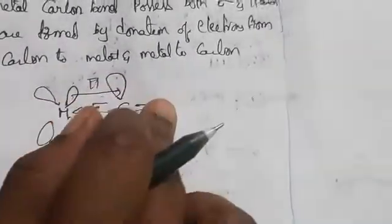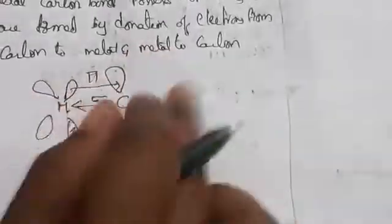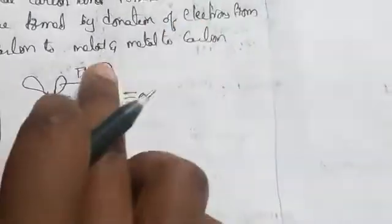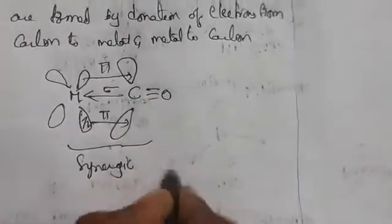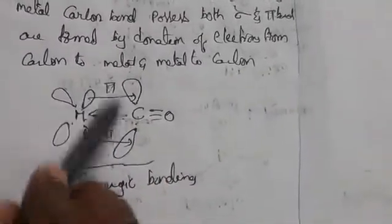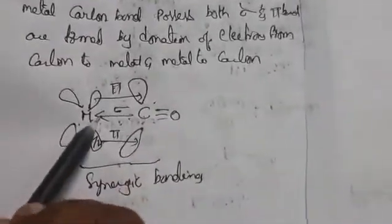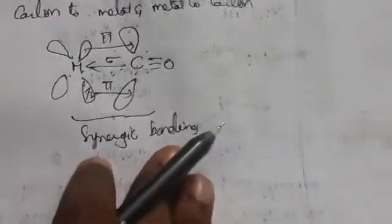This type of bonding is called synergic bonding. The pi bond creates a synergic effect and strengthens the bond between CO and the metal. When carbon donates electrons to the metal it forms sigma bonds, and when the metal donates back to carbon it forms pi bonds. The bond forms a strong interaction and strong overlapping.